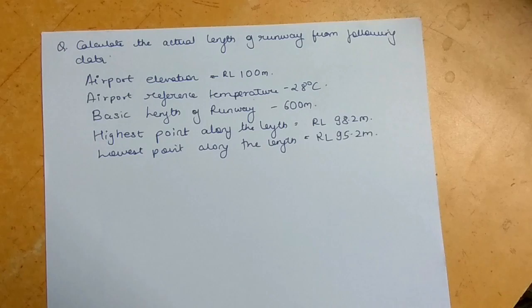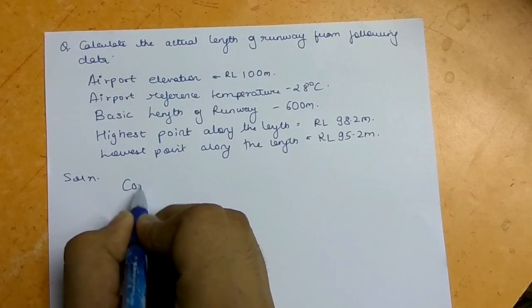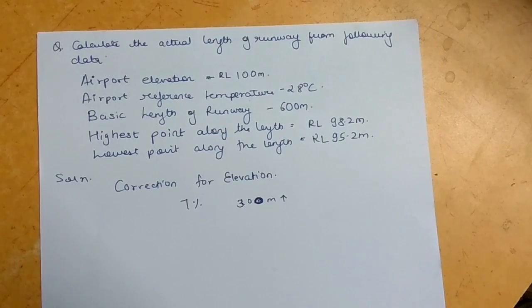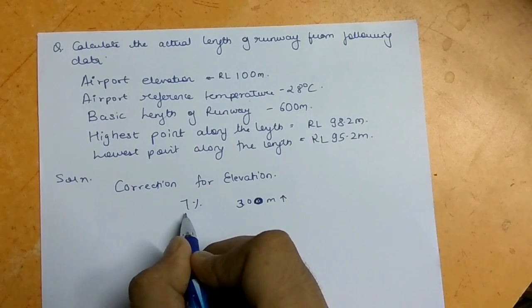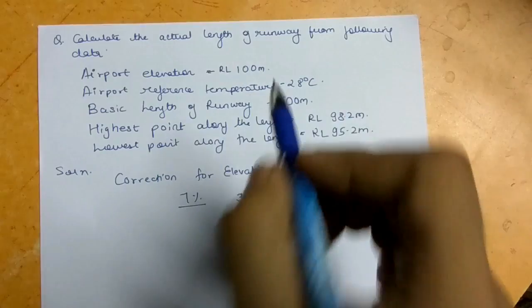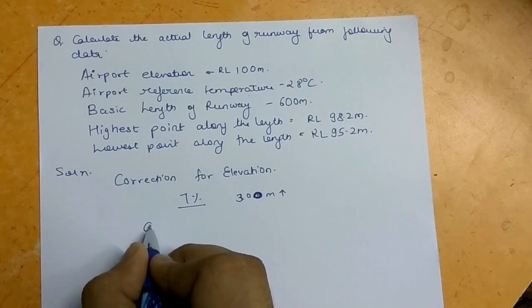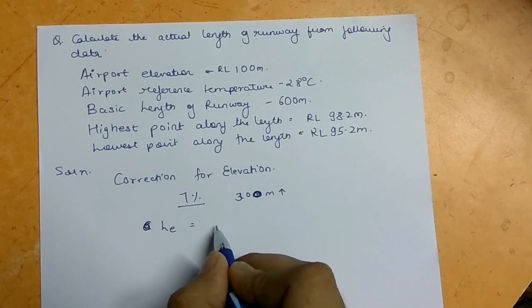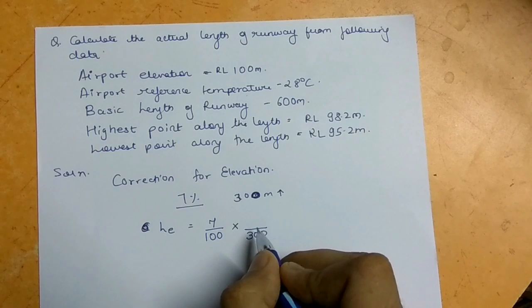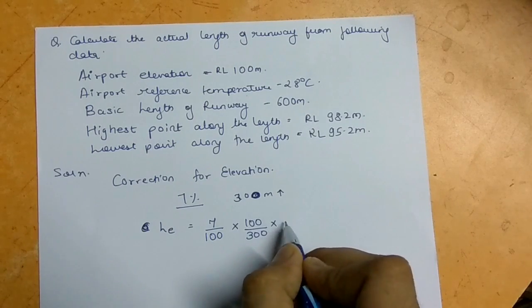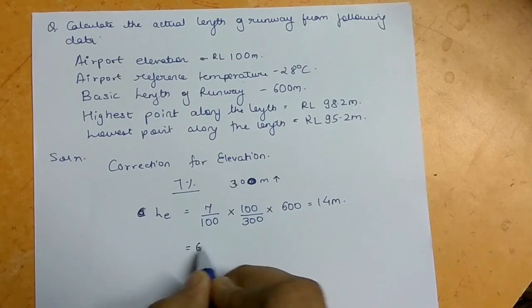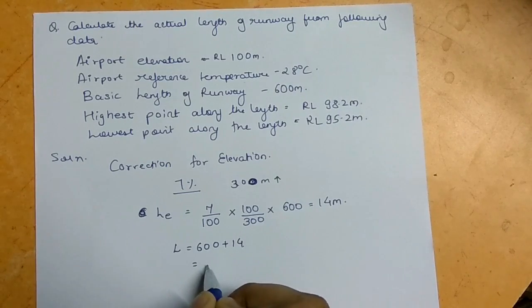First, we will apply the correction for elevation. As per ICAO recommendations, we increase the basic runway length by 7% for every 300-meter rise in elevation above sea level. Our airport elevation is only 100 meters, so the correction for elevation Le = (7/100) × (100/300) × 600 = 14 meters. The corrected length after elevation = 600 + 14 = 614 meters.